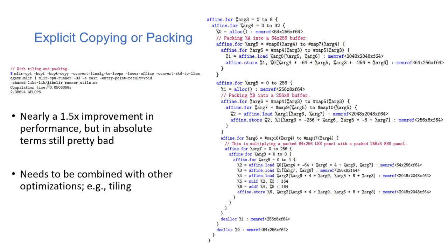Now we can see the effects of packing. First we have the polyhedral pass, then the copy/packing pass, then the rest of the passes as before. The improvement reaches 2.38 gigaflops — a 50% improvement in performance. That's still very far from the target of 60-70 gigaflops, but these transforms become much more powerful when combined with others like tiling.